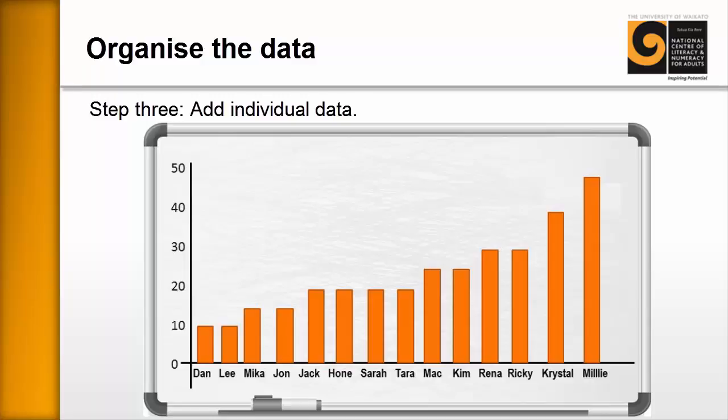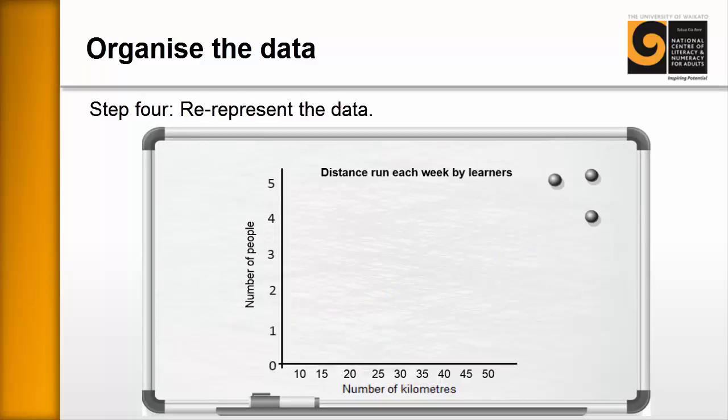In another part of the board, you write two new axes and get ready to write a new graph. What we've done here is we've changed what the axes represent, and this is usually an interesting point for the learners. Along the bottom, you might write number of kilometres, and on the vertical axis, you might write the number of people.